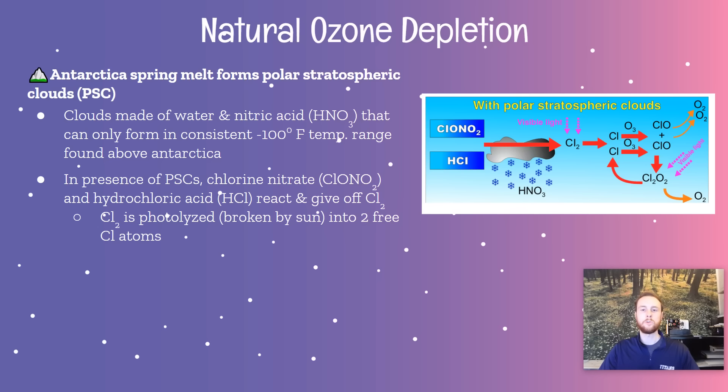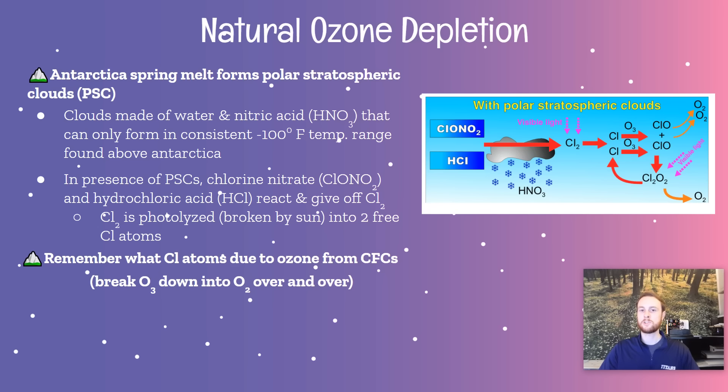When chlorine nitrate and HCl react, they are going to give off elementary chlorine, which is Cl2, or two chlorine atoms bound together. Then the sun is going to break down or photolyze those elementary chlorine molecules, and then we get chlorine atoms. From the previous section, we know what chlorine atoms do to ozone — they break it apart, over and over again. So we can have some natural depletion of the ozone.